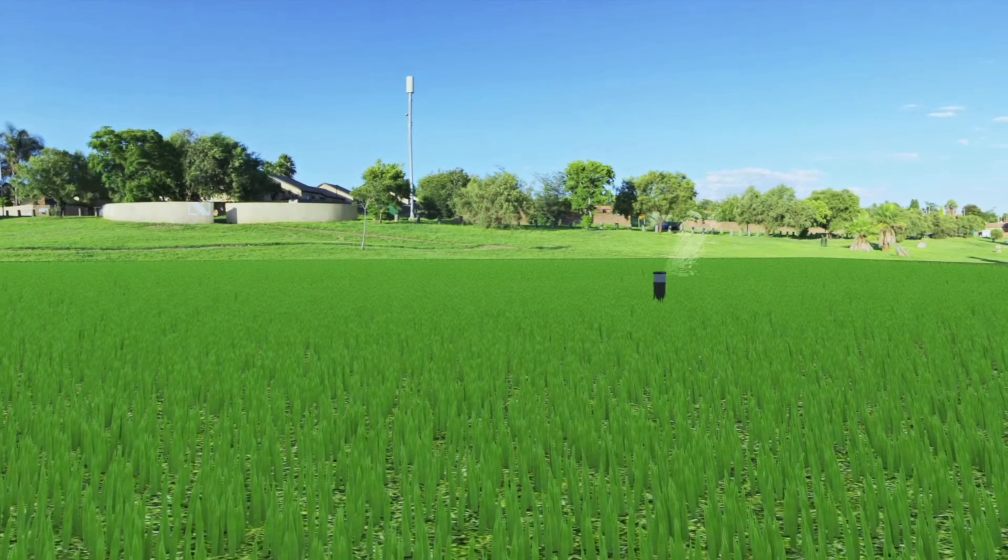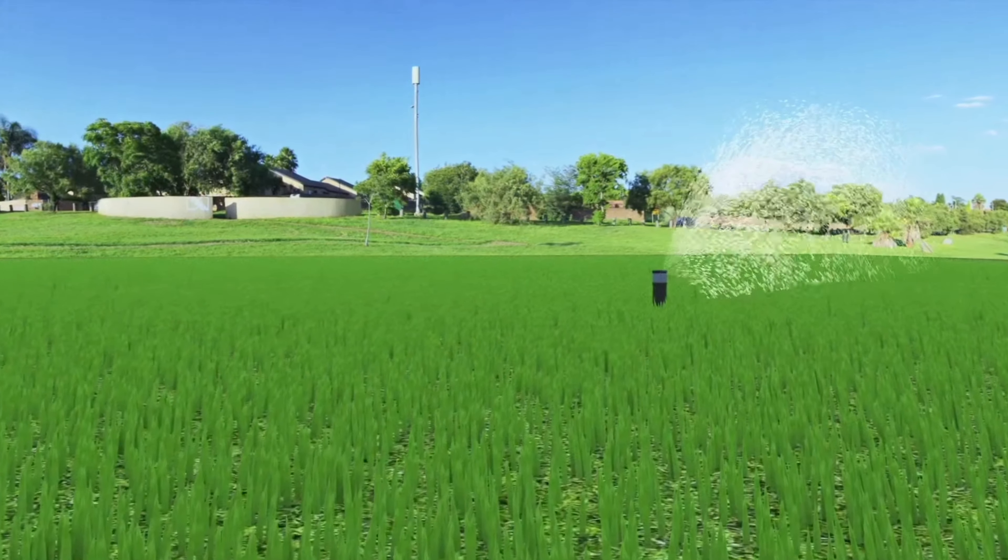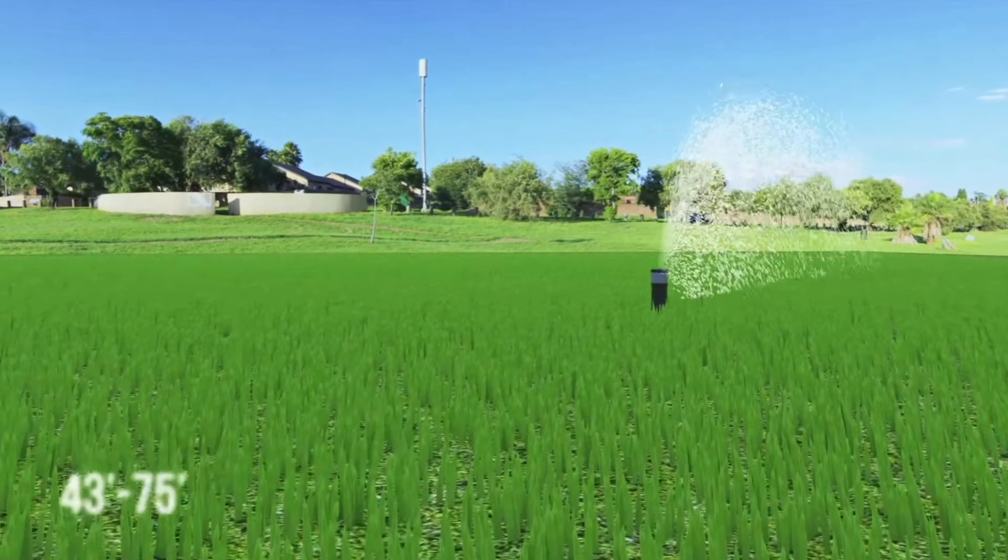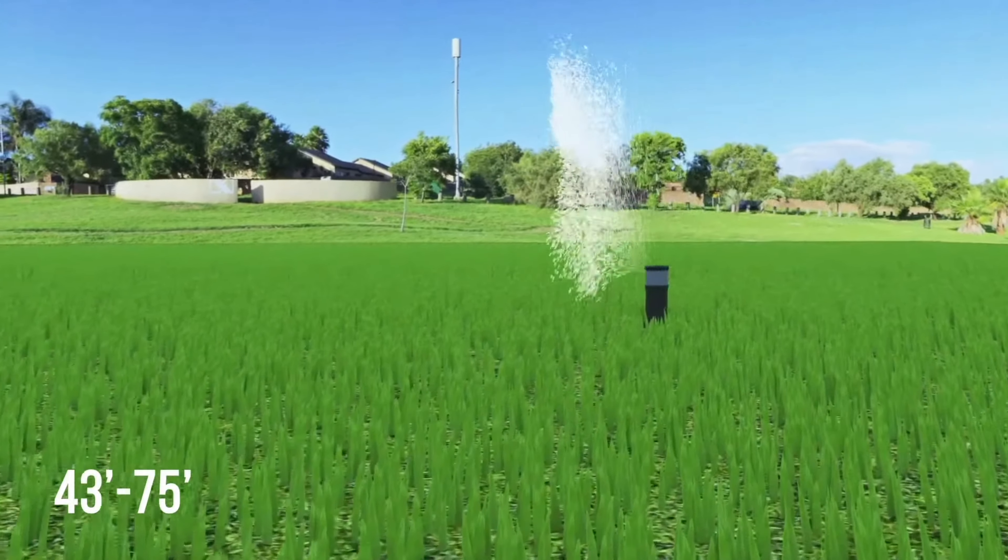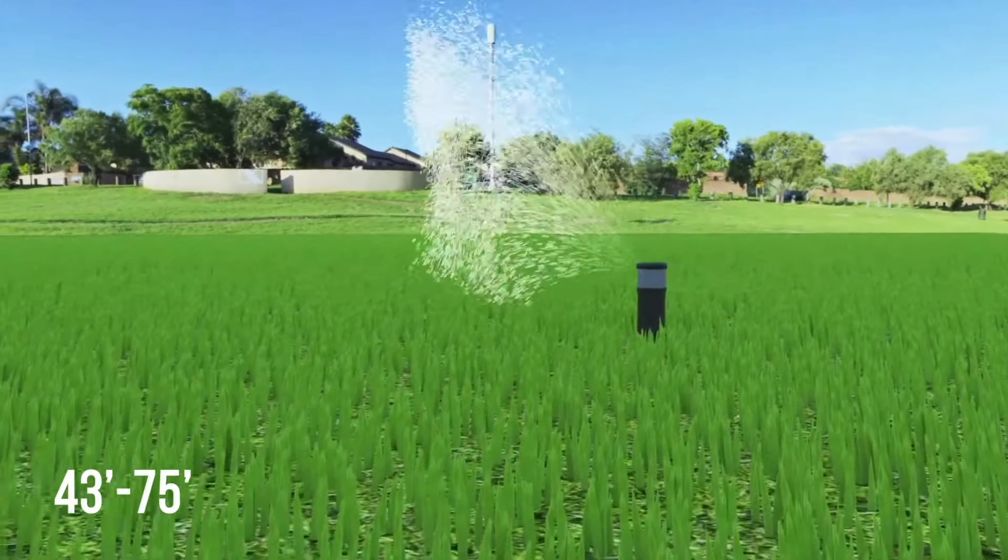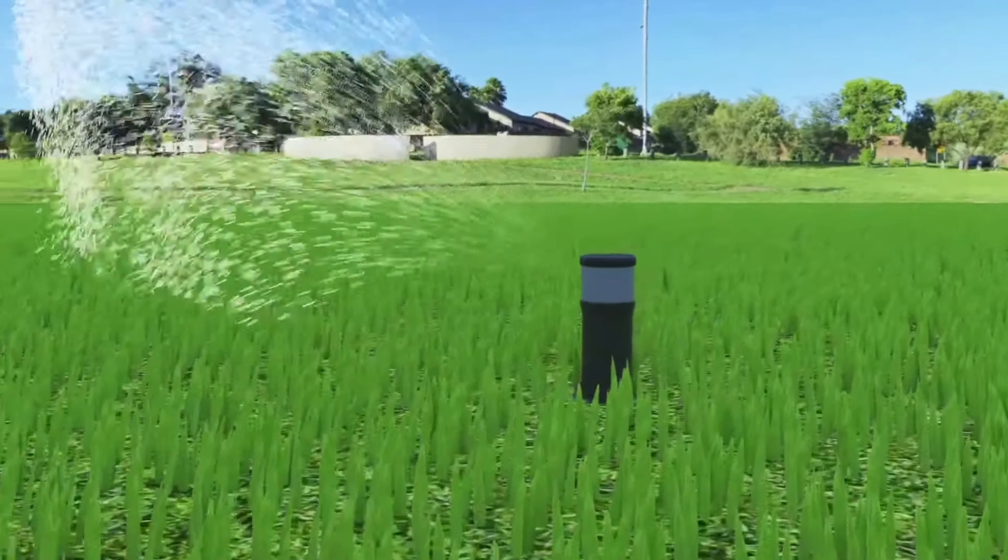The KRain ProSport Rotary Sprinkler is specifically designed for commercial and sports turf applications and is ideal for watering areas between 43 feet to 75 feet. In this video, you will learn how to set and adjust the ProSport and how to change a nozzle.